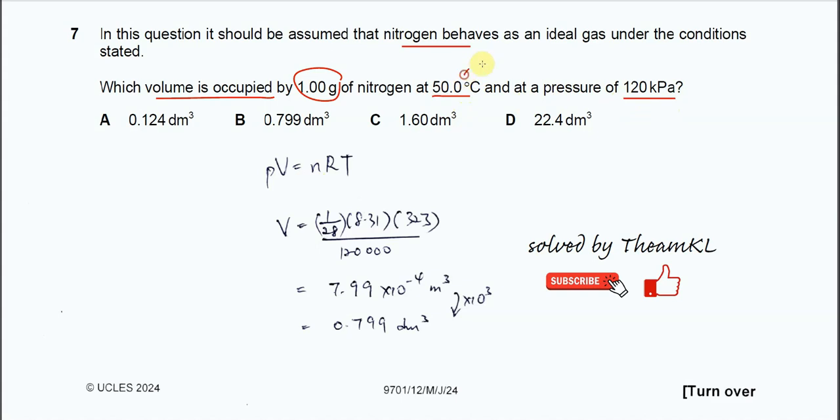The temperature needs to be converted to Kelvin, so 50 plus 273 gives you 323 Kelvin. Pressure needs to be converted to Pascals, so 120 times 1000. And the grams here need to be converted to moles, which is 1 gram over the molar mass of nitrogen gas, N2.